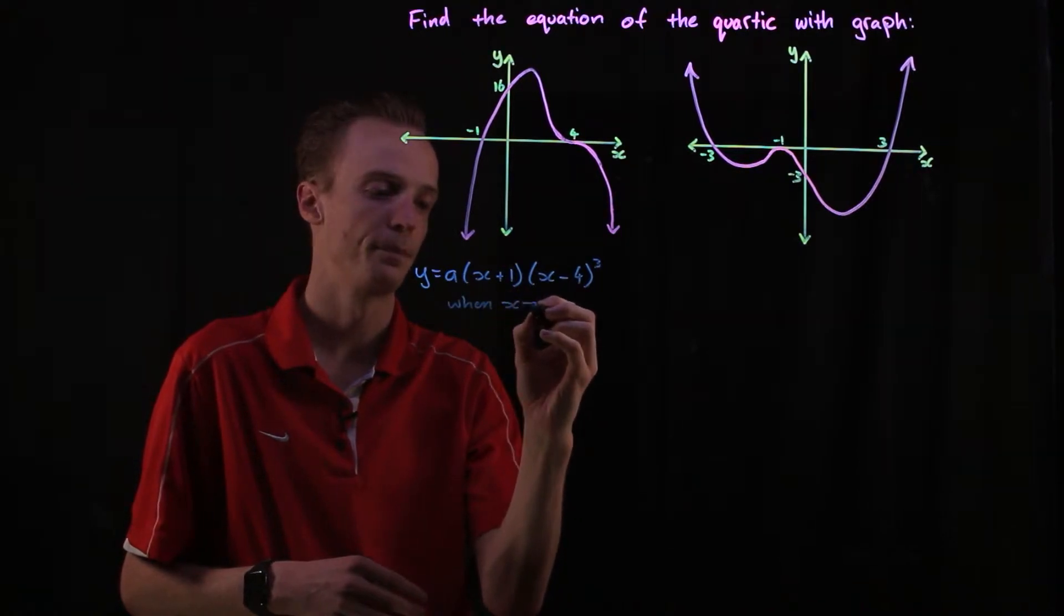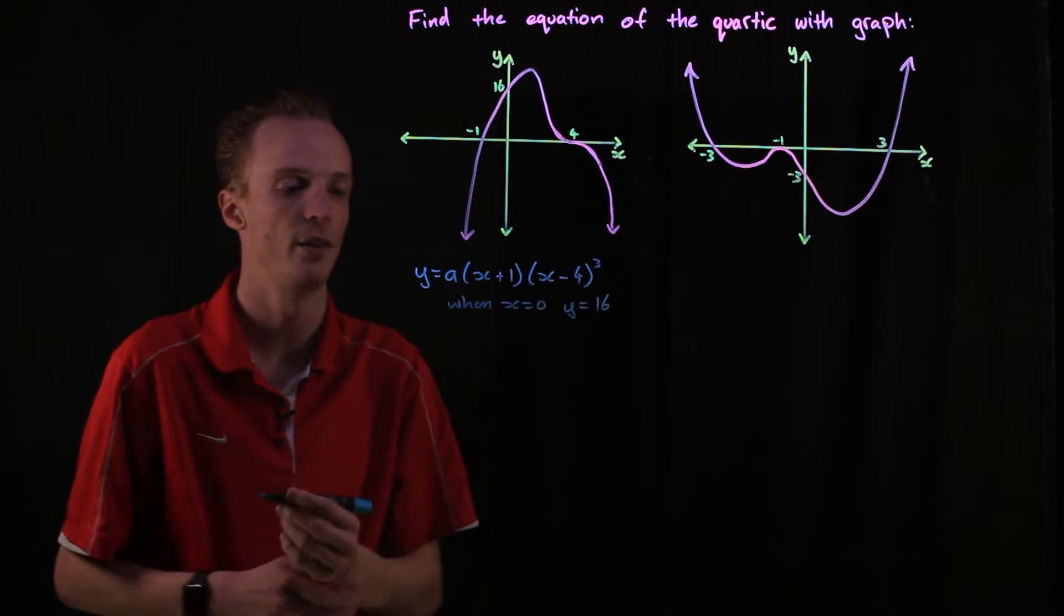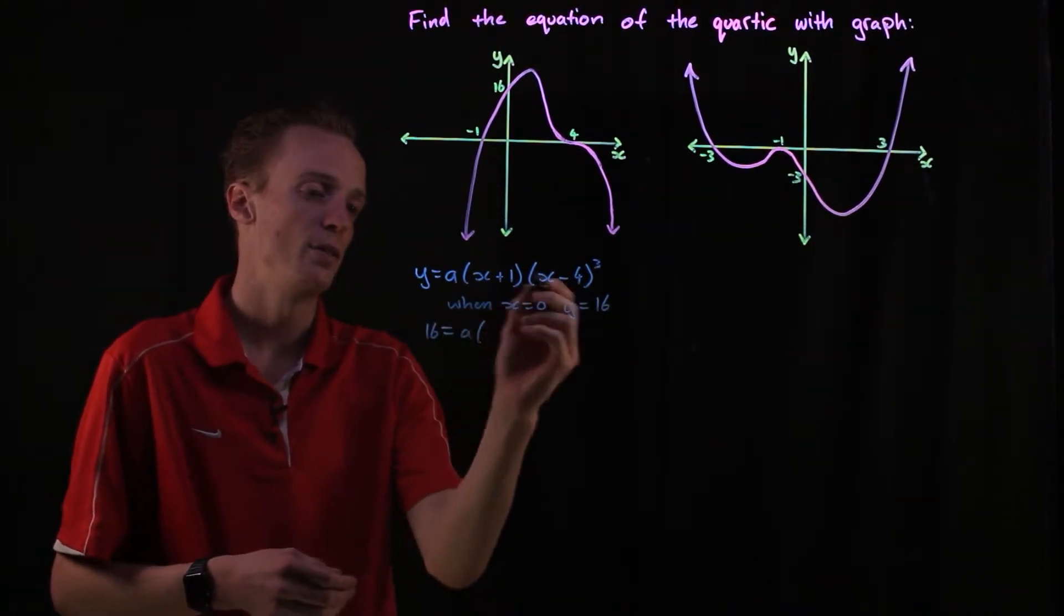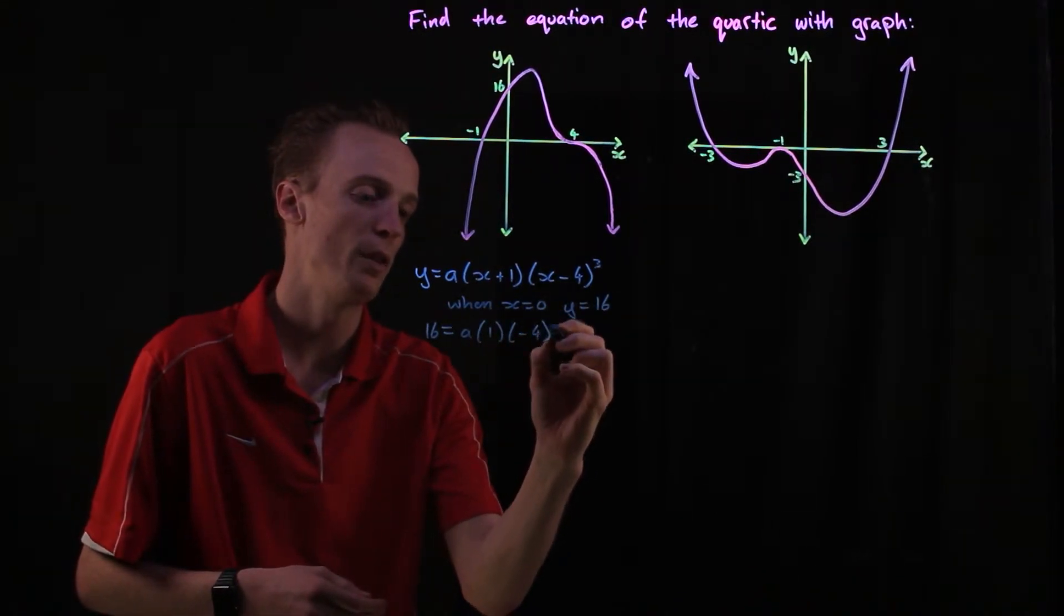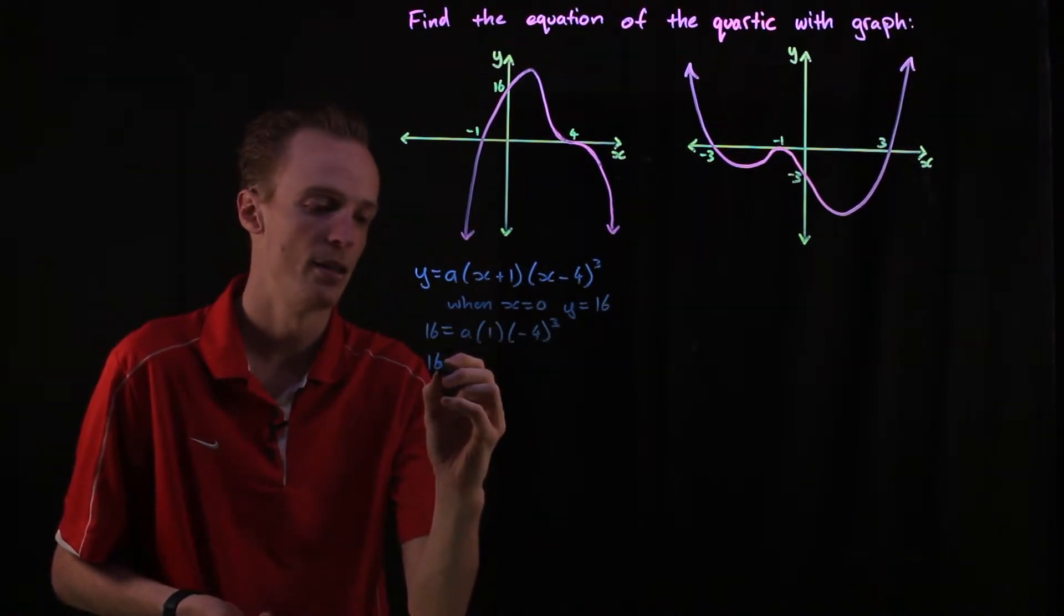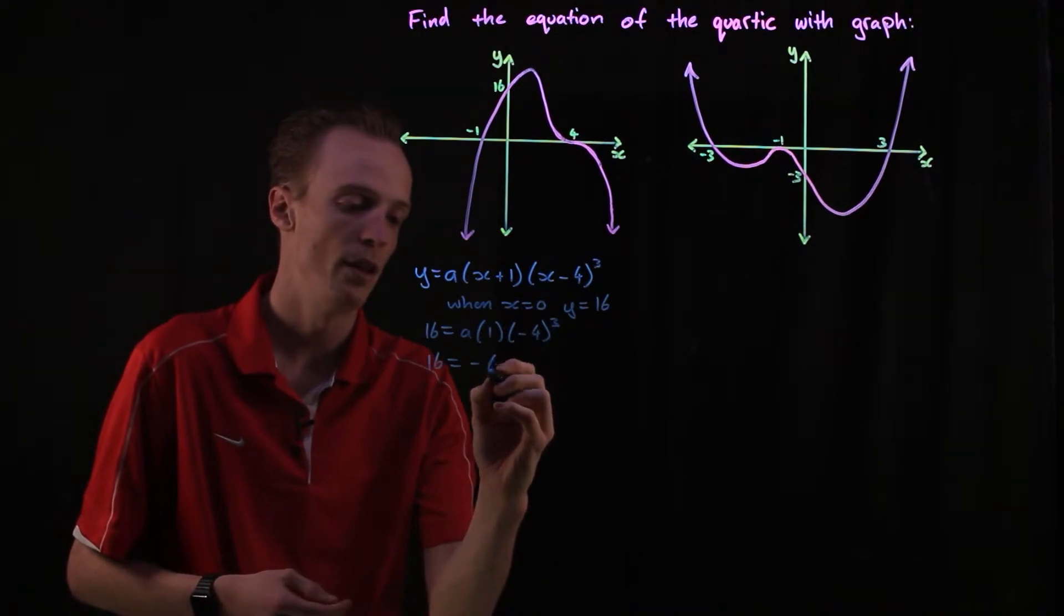It's given us the y-intercept here, so what that tells us is when x is equal to zero, our y is equal to 16. So that's the point that I can substitute in. 16 will equal a times (zero plus one is one) times (zero take four is negative four) and that will be cubed here.